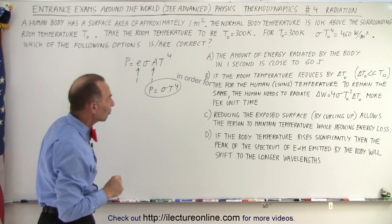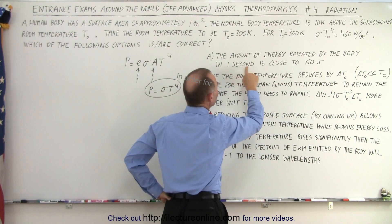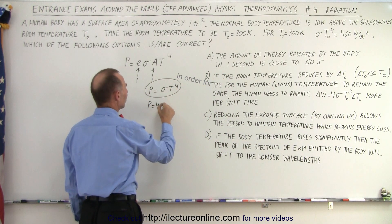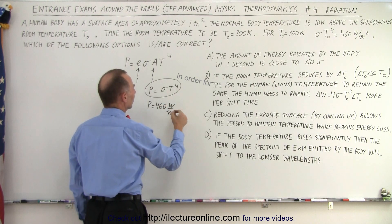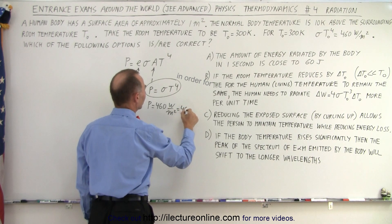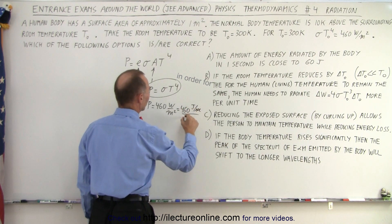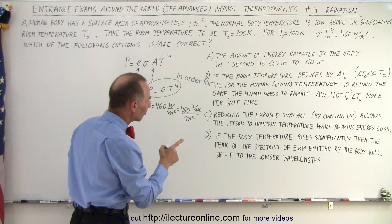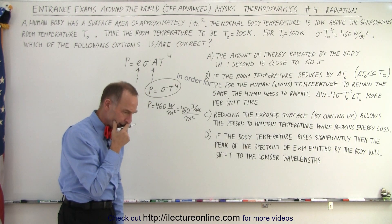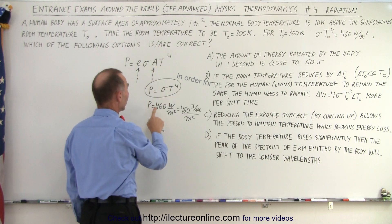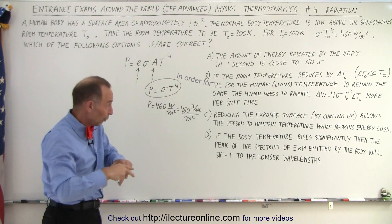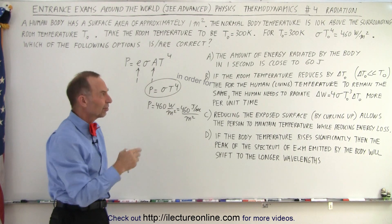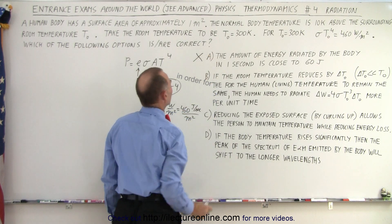All right, so now they ask us the amount of energy radiated by the body in one second is close to 60 joules. Now, if this is equal to 460 watts per square meter, well, watt, that would be joules per second. So this is equal to 460 joules per second per square meter. And notice the amount of energy radiated by the body in one second is close to 60 joules. Well, if the body is warmer than the room temperature, and this is the power radiated by the room for one square meter, then the body would then radiate more than that. So more than 460 joules every second. So 60 joules doesn't appear to be correct, so I'm going to choose that to be a wrong answer.